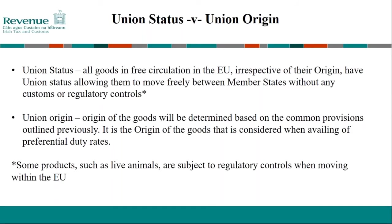The next few slides discuss the impact the Protocol on Ireland and Northern Ireland would have from an origin perspective. Before that, it's important to highlight the difference between EU origin and EU status. All goods in free circulation in the EU have EU status regardless of their origin. This means products can move freely within the EU once all customs formalities have been completed on the original import. The origin of the product depends on all the factors discussed during the webinar, and it's the origin that's important when considering preferential treatment.